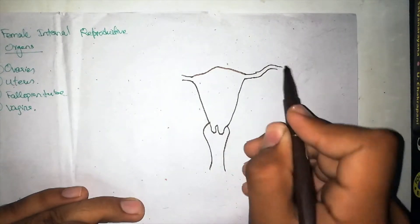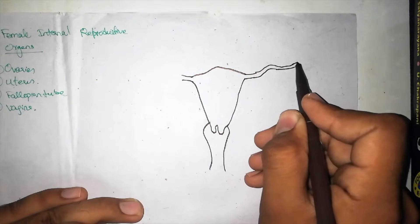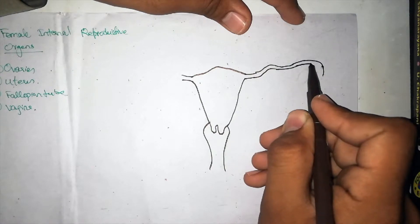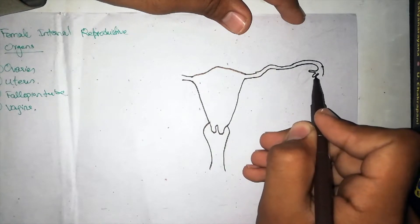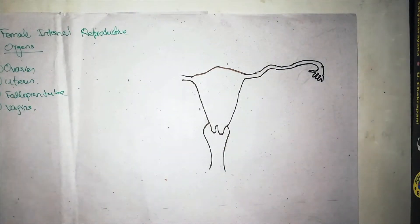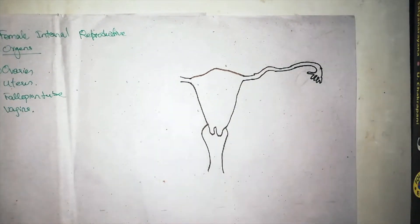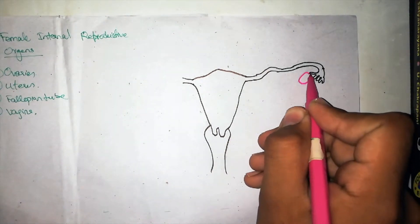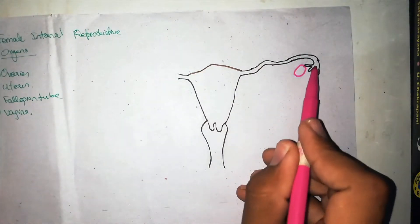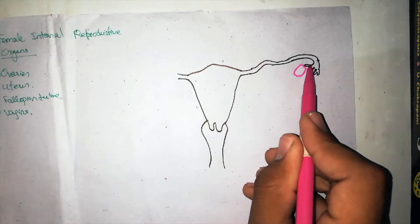The uterine tube continues and ends in an infundibulum. This part is called the infundibulum, and it has different finger-like projections called fimbriae. One of these fimbriae — the ovarian fimbriae — will be attached to the superior pole of the ovary. I'll talk about the poles, surfaces, and different structures of the ovary in a moment; right now I'm just giving you an idea of the layout of the female reproductive system.